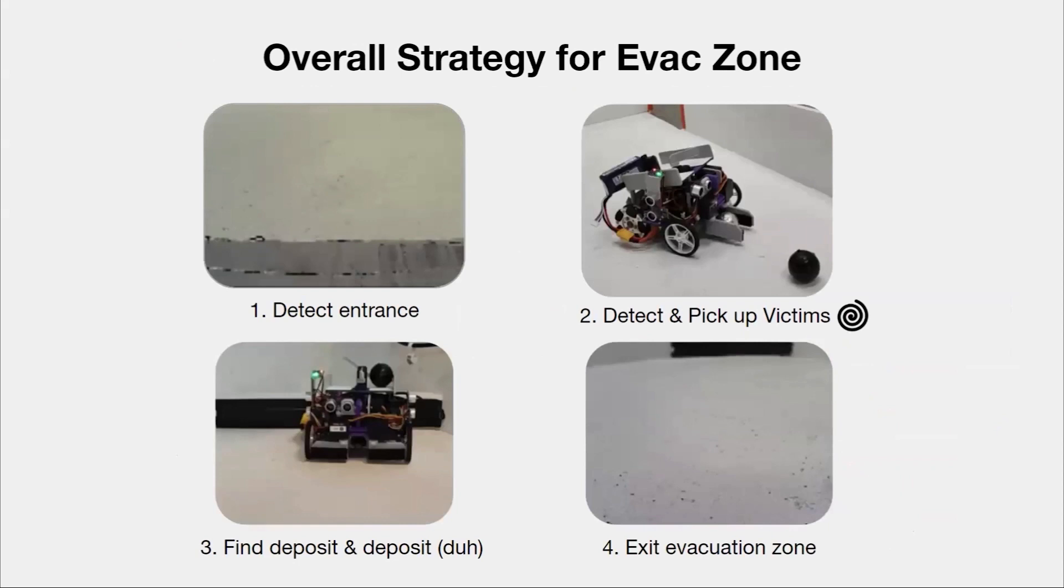Our overall strategy for the evac zone is in four parts. First, we enter the evac zone by detecting the silver strip at the entrance of the evac zone, and then we detect and pick up victims by spiraling. After reaching the middle of our spiral, we find the deposit and deposit all three victims into the evac zone, and then we exit.